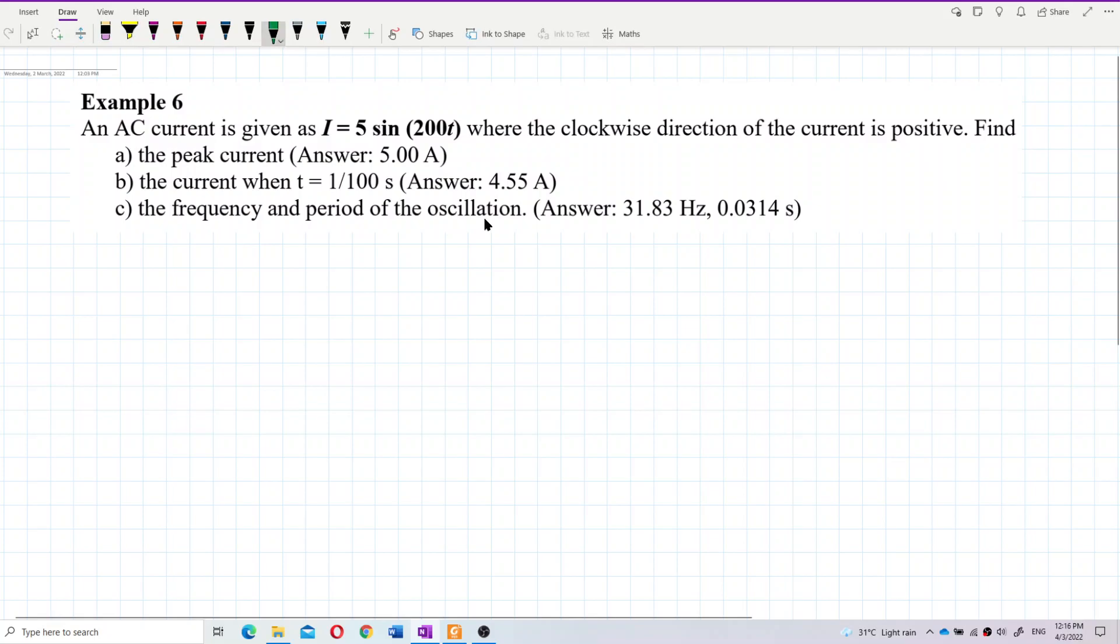I want to write down the equation first. I equals 5 sine 200t. The general equation is I equals I naught sine omega t.